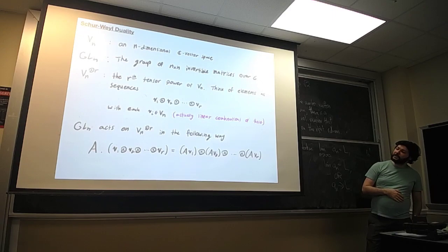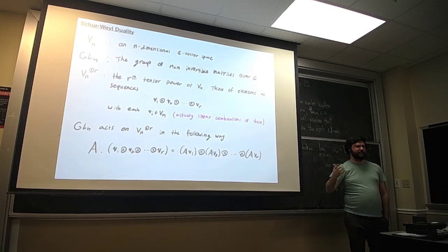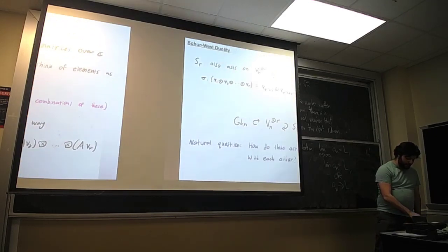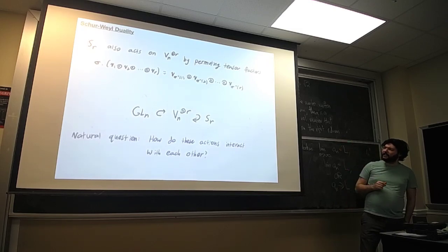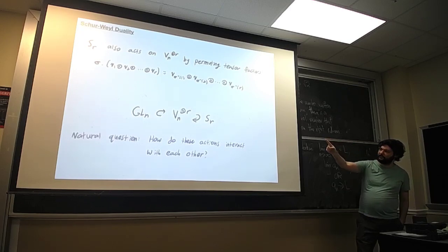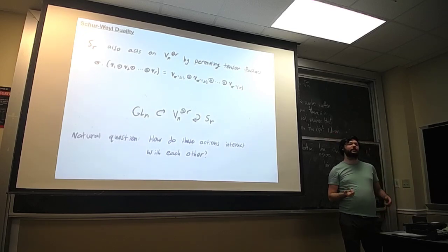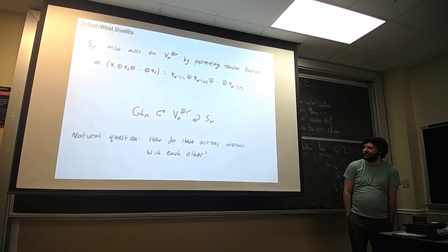GL_N acts on the r-th tensor power diagonally: a matrix A acts on a sequence by acting on each element of the sequence the same way. There's another interesting action — the symmetric group S_r acts on these sequences by rearranging them: sigma acts by permuting all the tensor factors by sigma. So we have two different actions, one of GL_N and one of S_r, on the r-th tensor power.